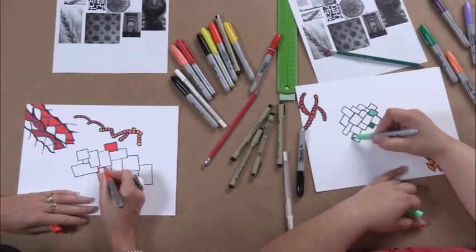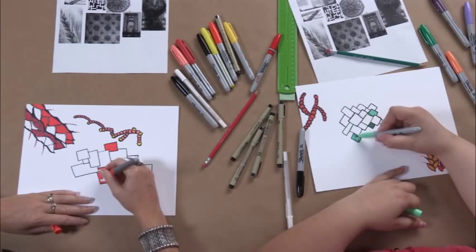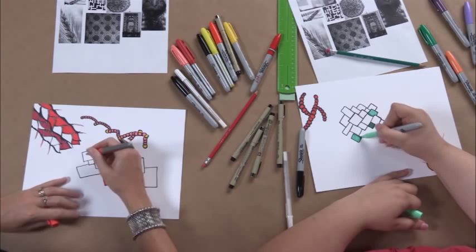Actually, I really suggest coloring first because sometimes the Pigma Microns, if you're going to go over it with the Sharpies, they will make the Pigma Microns bleed out a little bit and you don't want to create a smudge.